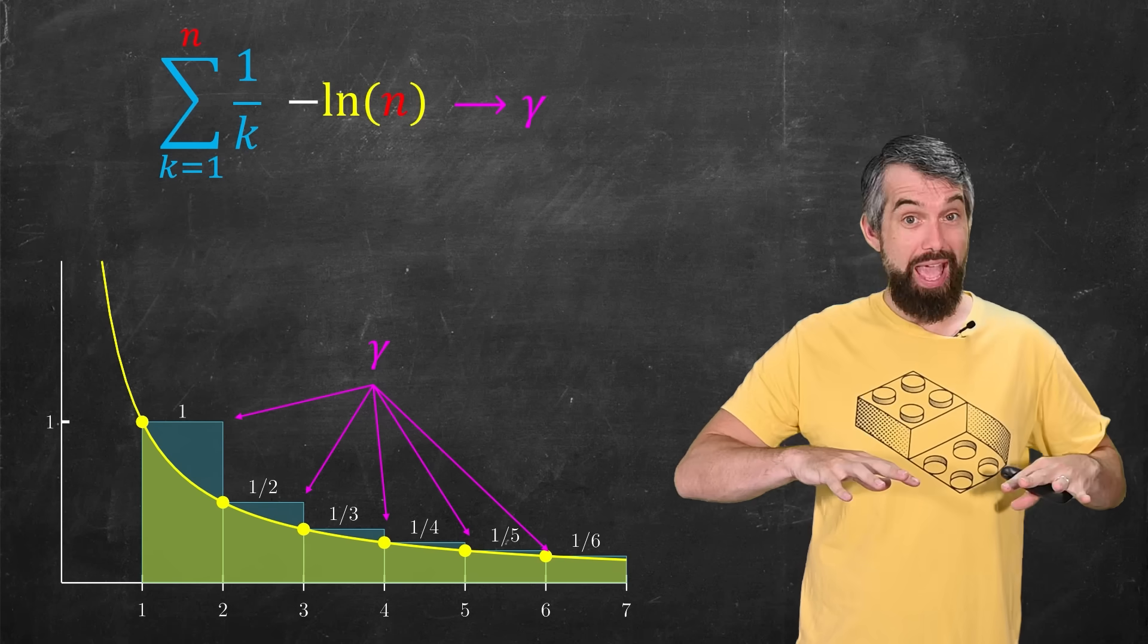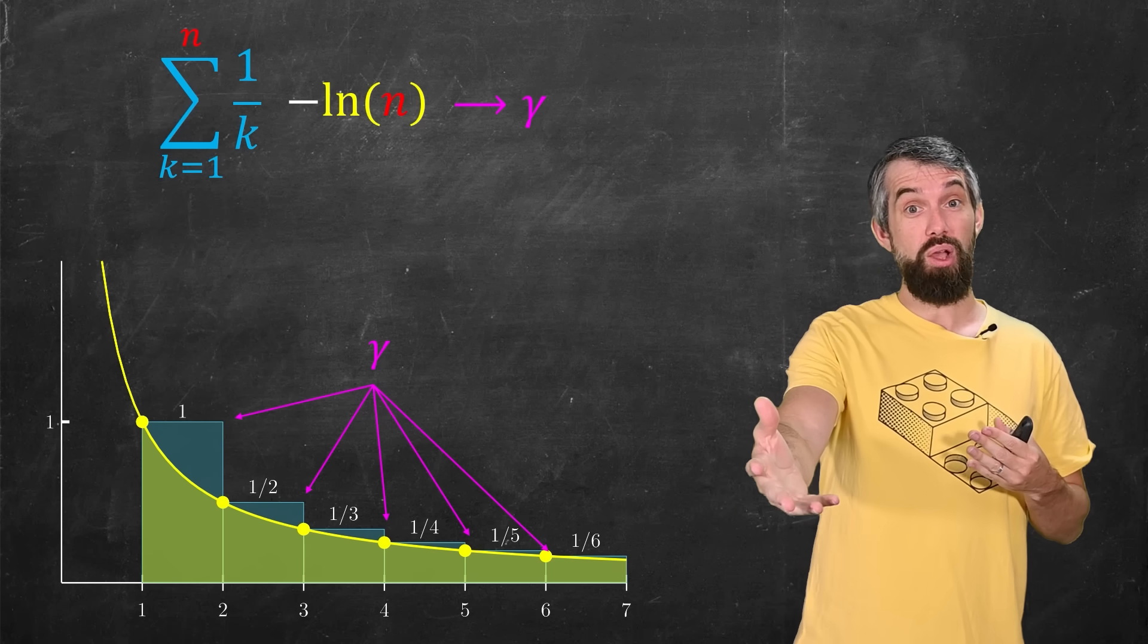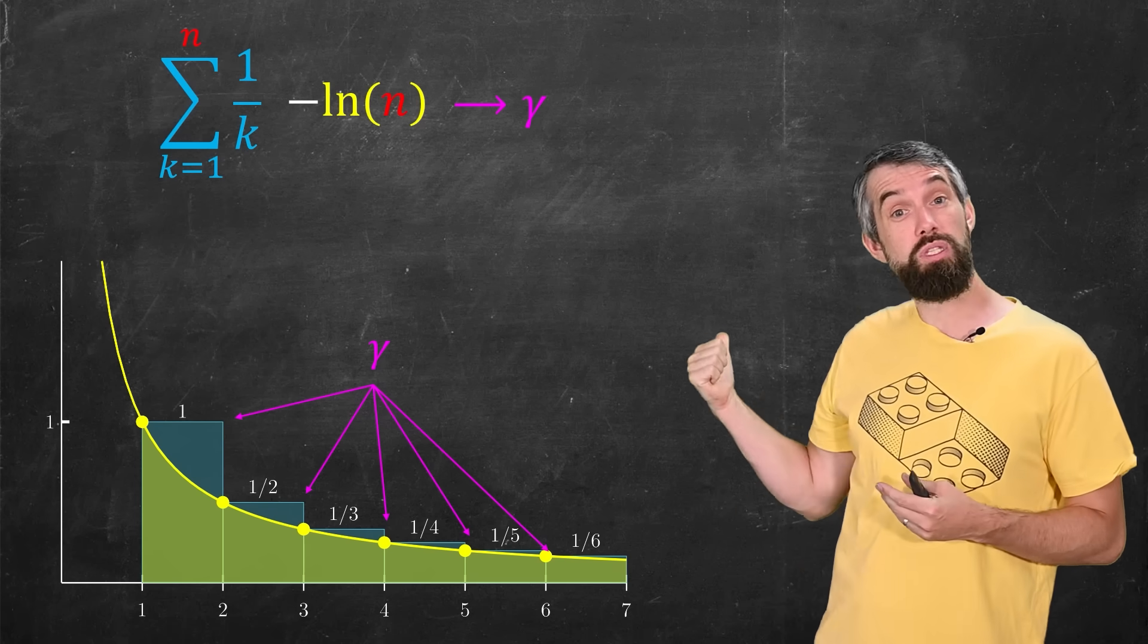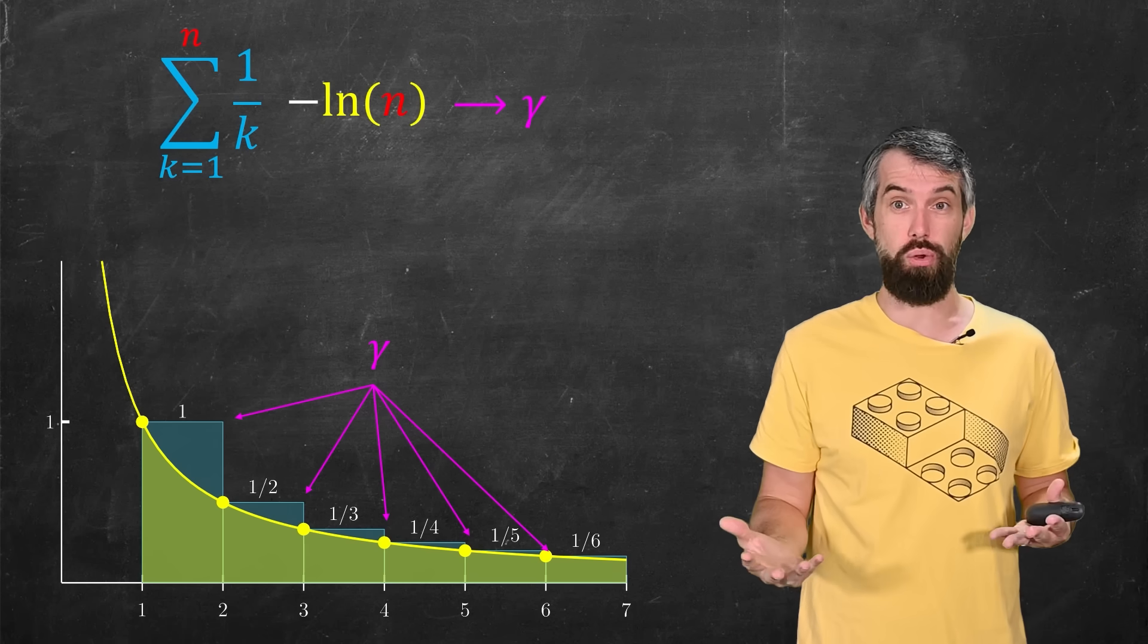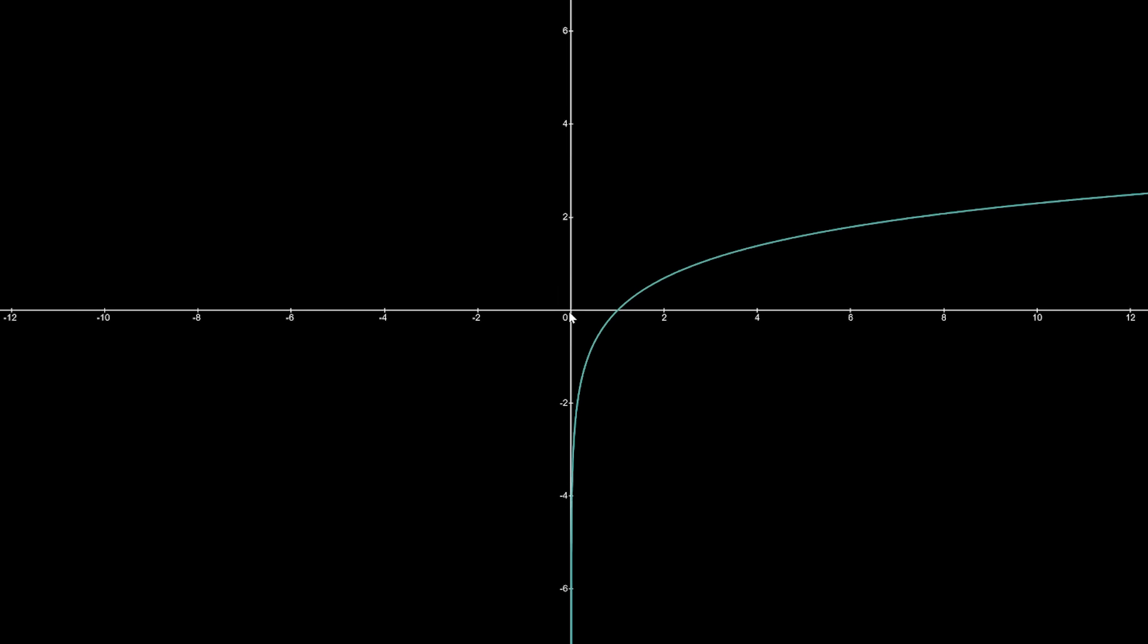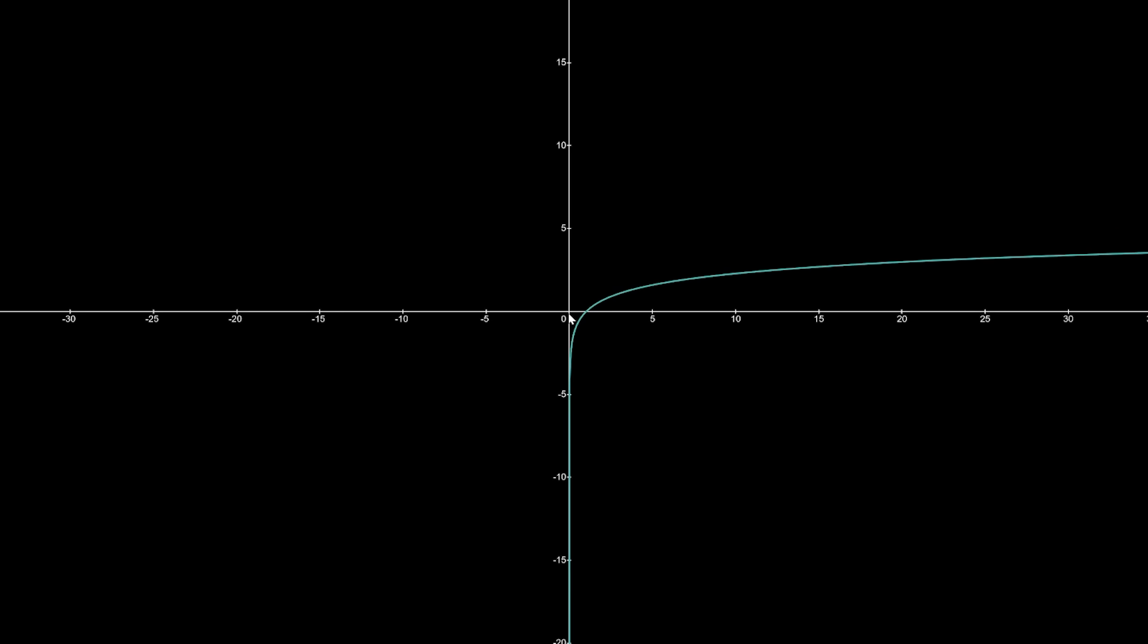So here's the point. The overhang of our Tower of Lyra, well, it just grows like logarithm. It has logarithmic growth. And that's partly why it grows so slowly. Logarithm is a function that really slows down as the n gets large.